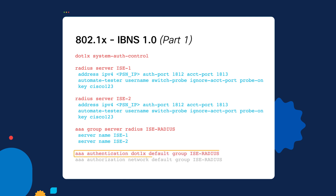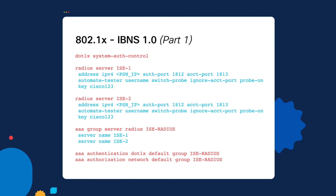The next two commands are the AAA authentication dot1x command, which processes all authentication requests coming from any interface that has dot1x enabled and sends them to the ice-radius group you just configured. The next command is the AAA authorization network command, which is necessary in order to receive authorization requests from the ISE boxes. If not configured, we will not accept them on the switch, meaning that if you have a VLAN configuration or an ACL configuration that you wish to receive from the ISE box dynamically, it will not be accepted.